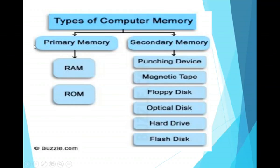Let us see this flowchart. Memory is of two types: Primary and Secondary Memory. Primary Memory is also known as Internal Memory. Secondary Memory is also known as External Memory. For example, CD and DVD.